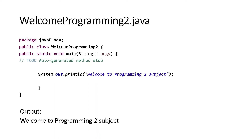Public static void main is the main method of any Java program. Once you run your compiler or execute the program, the first method it will search to execute is public static void main. In this example, we just use one line of command, which is System.out.println, which performs a display of a text inside double quotes — welcome to programming subject.